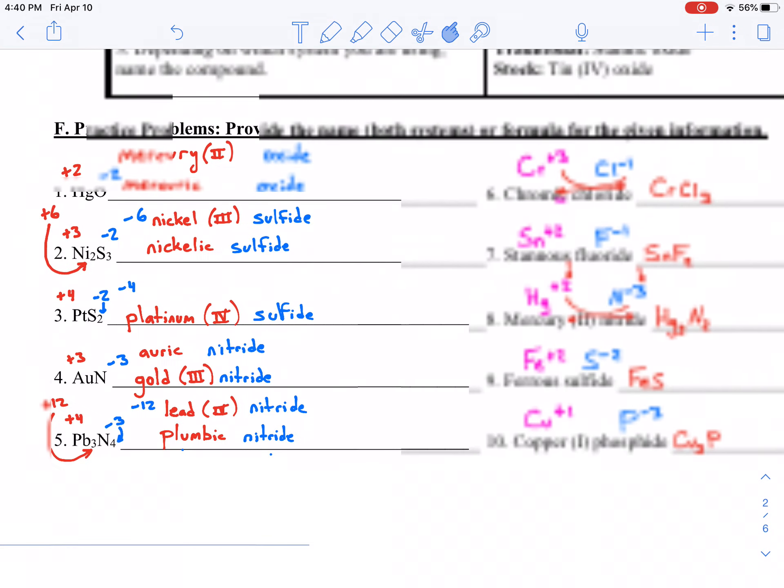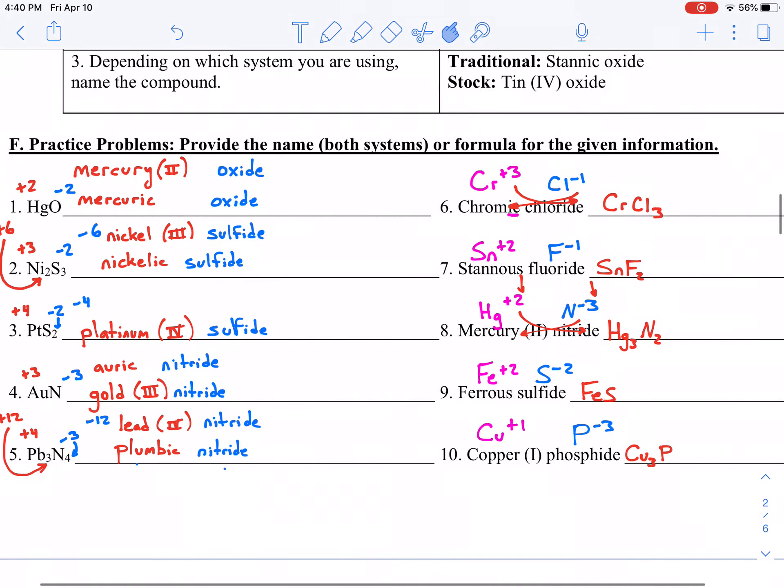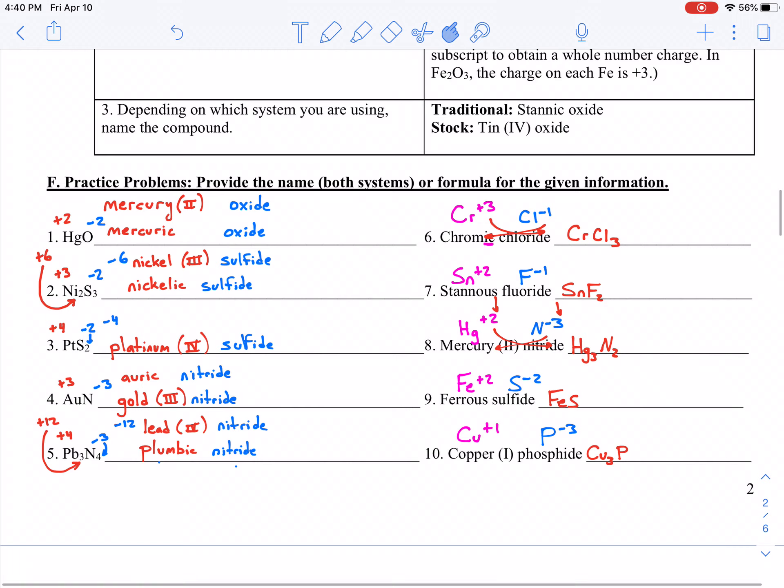So this begs a question, and the question is, when do you need to do this? When do you need to write out those Roman numerals versus Latin names? When do we have atoms that require more than one charge? When do we not? And if you stay tuned for the next video, we are going to answer just that question. So if you have that question, jump into your next video, and we will discuss it there.